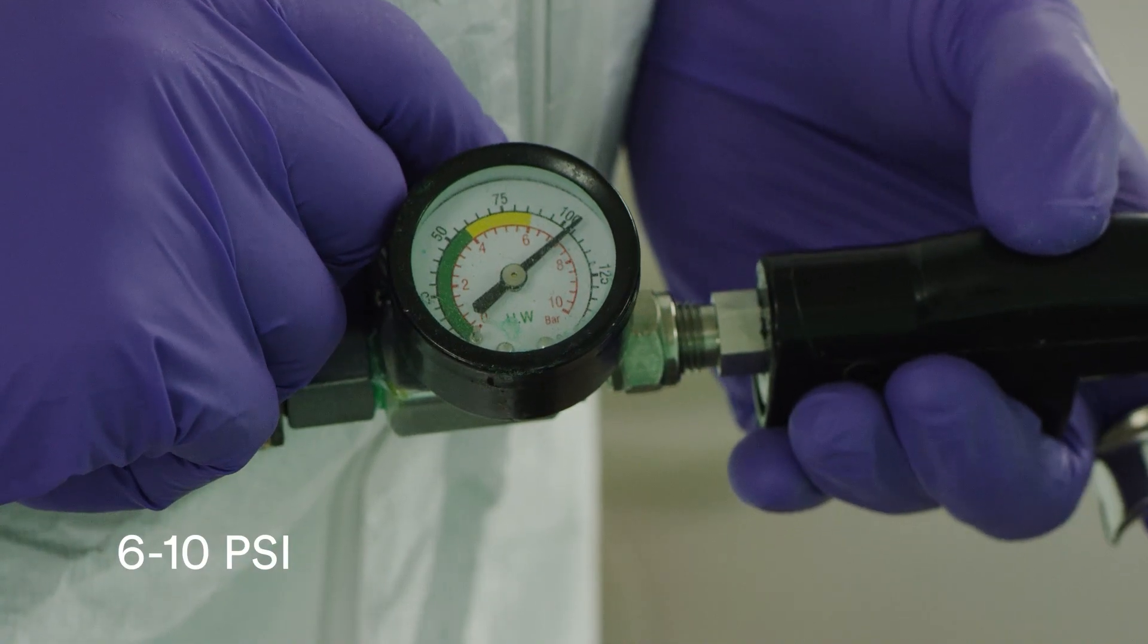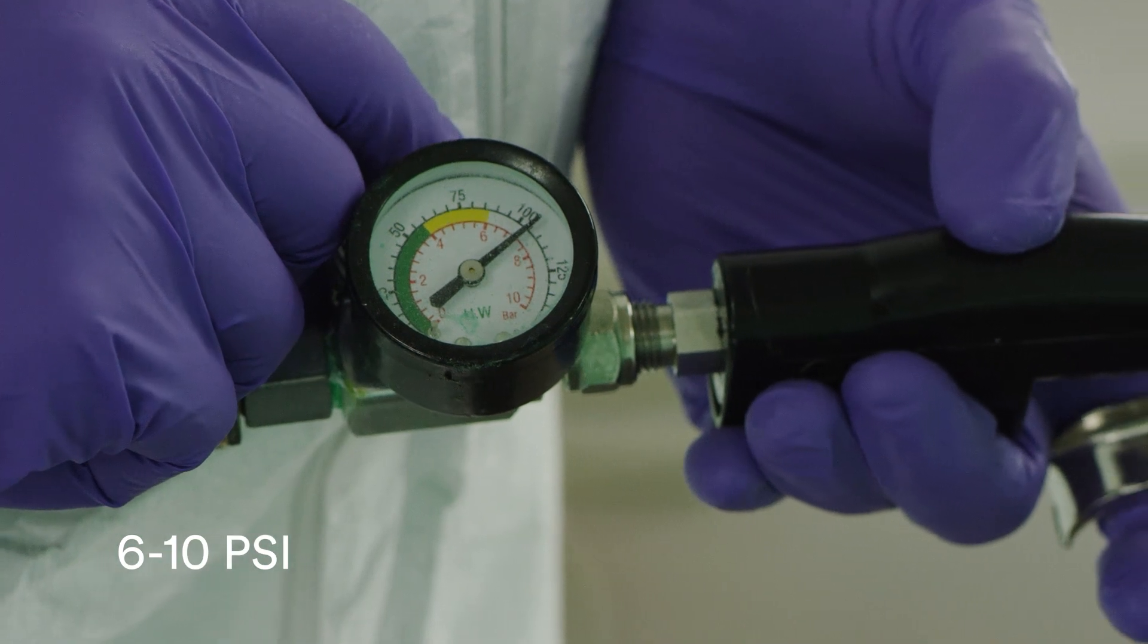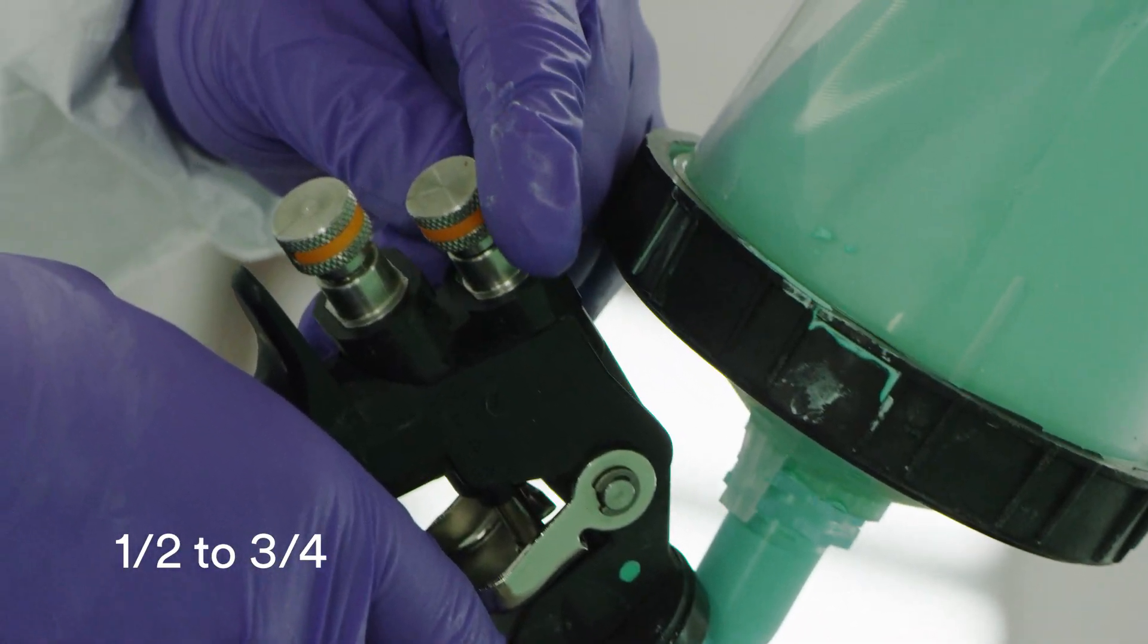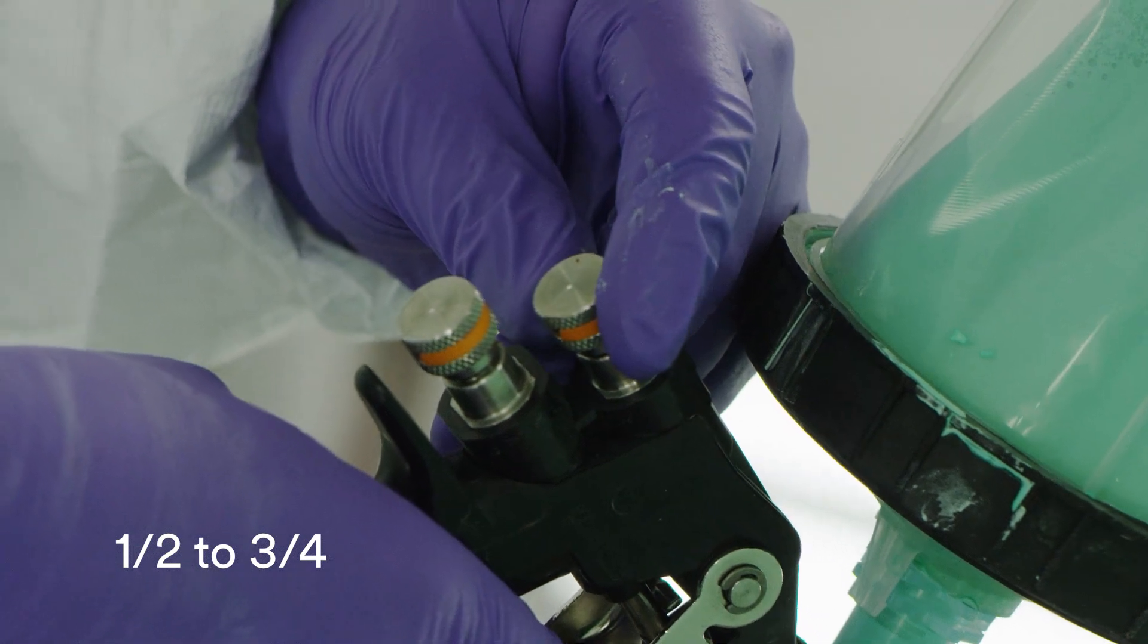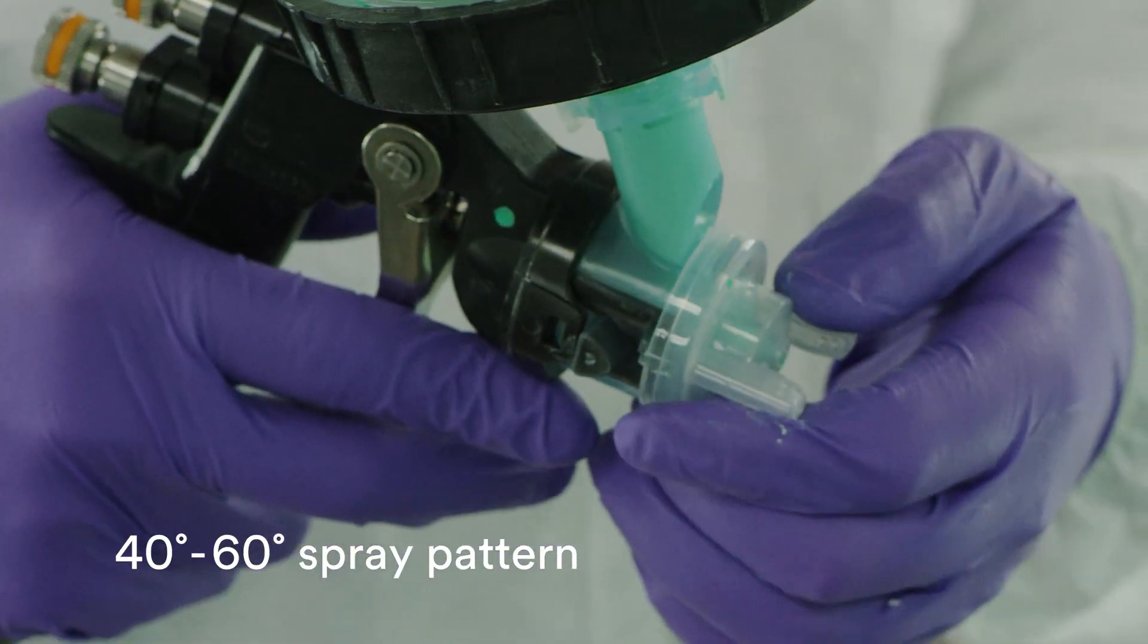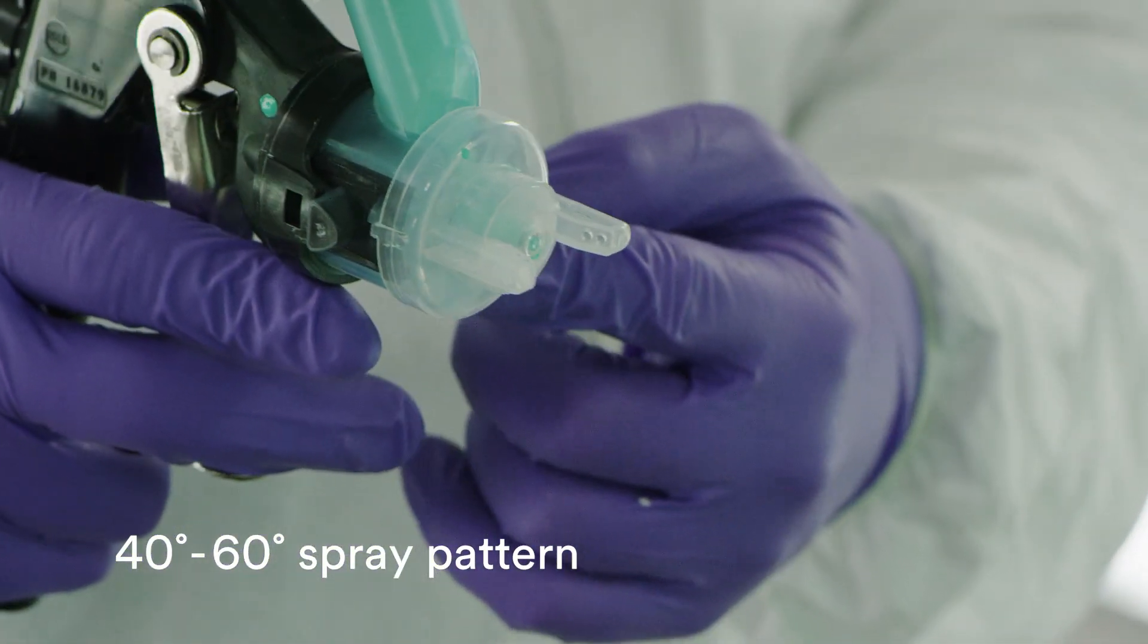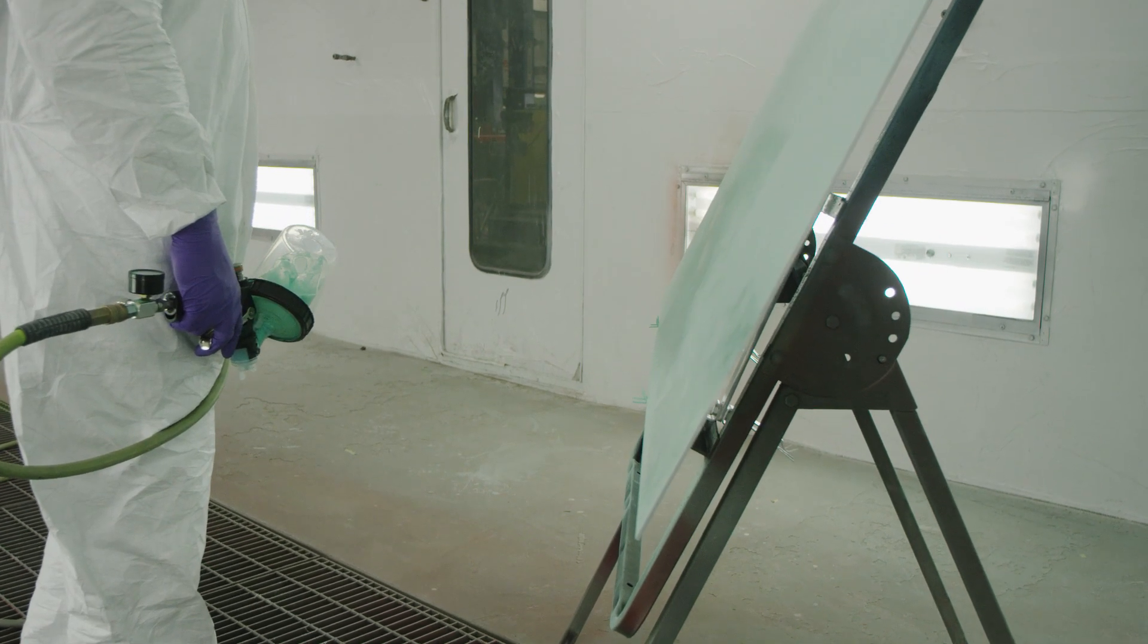The atomizing pressure should be 6 to 10 psi at the spray gun tip. The fluid nozzles should be turned out 1.5 to 3.25 from the closed position. Adjust the fan pattern control to a 40 to 60 degree spray pattern. Spray 6 to 12 inches away from the panel.